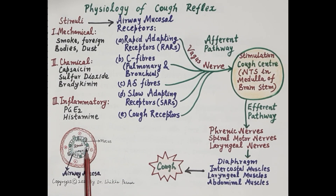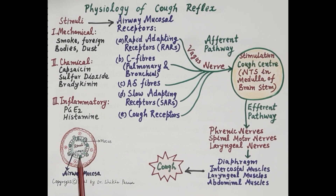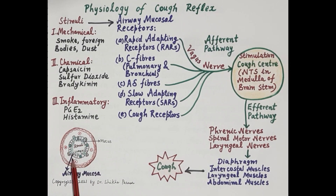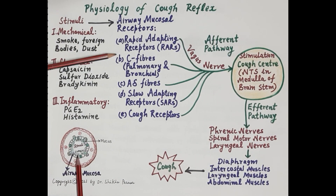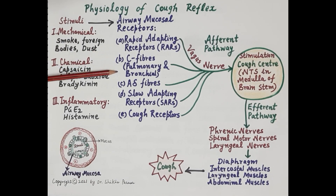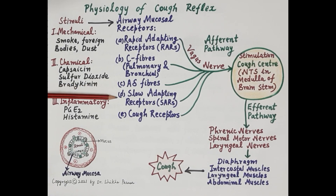The green-colored cells shown here are goblet cells, situated between the columnar cells. These goblet cells and the submucosal glands produce mucus, shown here in green. This mucus forms a covering sheet over the mucosa, protecting the innermost lining of the respiratory tubes. Located within this mucosa are airway mucosal receptors: rapid adapting receptors (RARs), sensory C fibers (pulmonary and bronchial C fibers), sensory delta fibers, slow adapting receptors (SARs), and cough receptors.